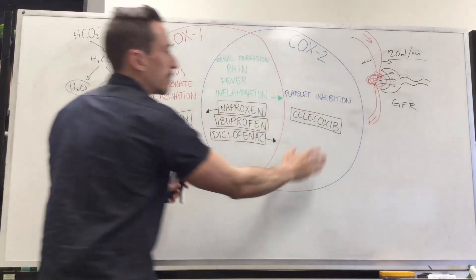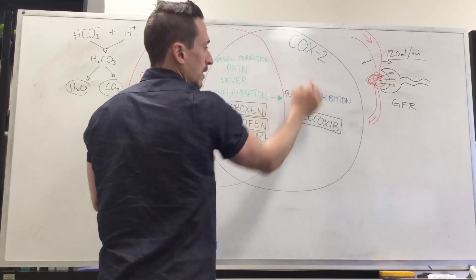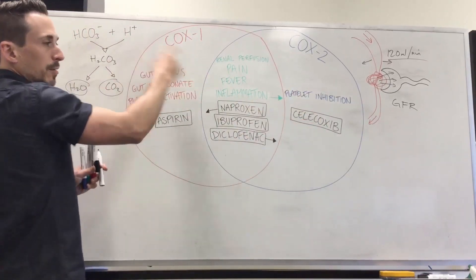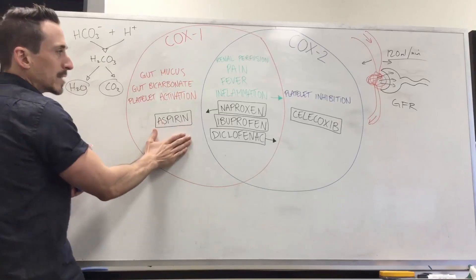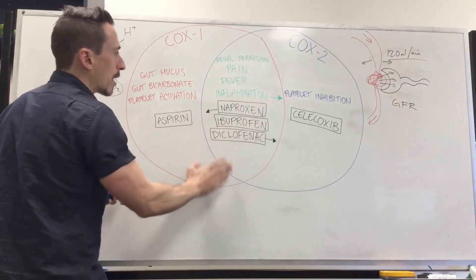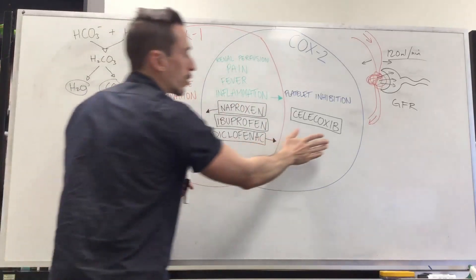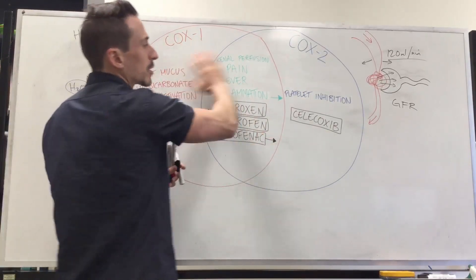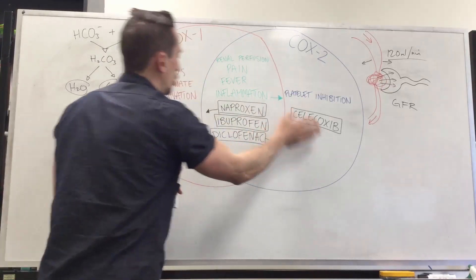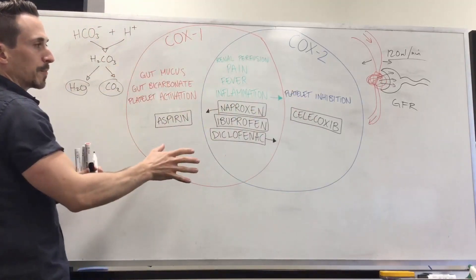So the other thing is that because celecoxib is COX-2 specific, it doesn't have the gut problem. So this is why aspirin, ibuprofen, naproxen, Voltaren have been told to take these on a full stomach, and celecoxib, they still say it because it's a COX inhibitor, but it's a lot more gentle on the stomach than the other drugs.